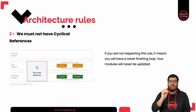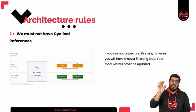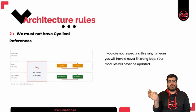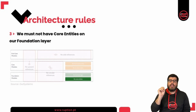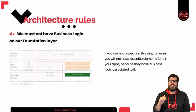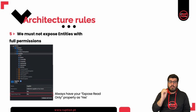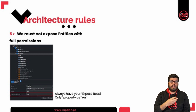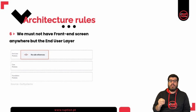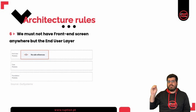The best way to correct cyclical references is to move the shared concepts into a new module below both, which the original modules A and B can then consume instead of each other. We must not have core entities on our foundation layer — core entities are placed inside the core layer. We must not have business logic on our foundation layer, since the foundation layer is where we place elements that are business agnostic and reusable in any business context. We must not expose entities with full permissions — exposed entities must be on the core layer with the expose read-only option set to yes. Finally, we must not have front-end screens anywhere but the end user layer.